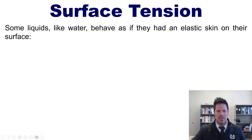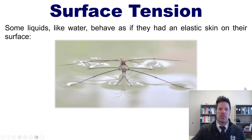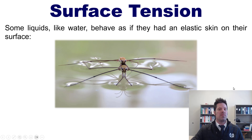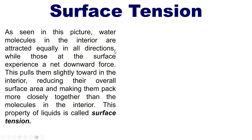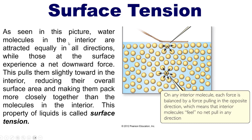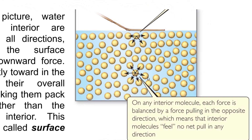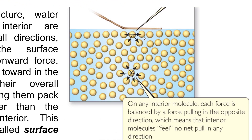We now move on to surface tension. Some liquids, like water, behave as if they had an elastic skin on their surface, which allows little insects like water striders — or water skeeters, depending on what you call them — to glide across their surface. This phenomenon is caused by an imbalance in the liquid's intermolecular forces at the liquid surface, as shown in a figure from our text. Water molecules in the interior are attracted equally in all directions by neighboring molecules, while those at the surface only experience a net downward force. This net downward force pulls them slightly toward the interior, reducing their overall surface area and making them pack together more closely than molecules deeper down, conferring upon them surface tension, which allows lightweight things to glide or float across.